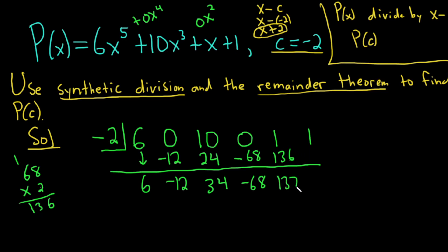Add these. You get 137. And then times 2. It's going to be negative this time. It's going to be negative 264, right? Negative 264, I believe.